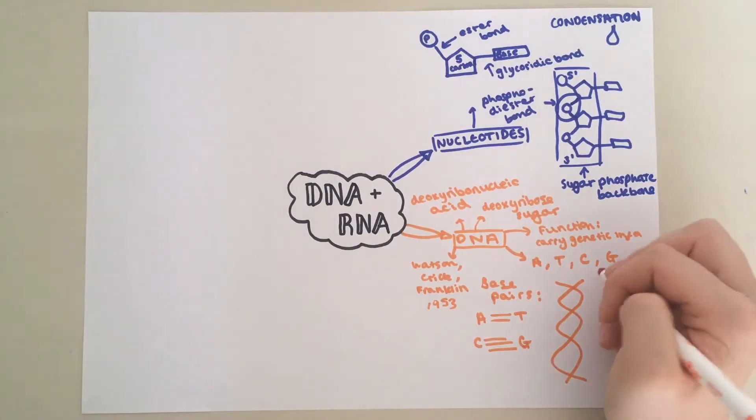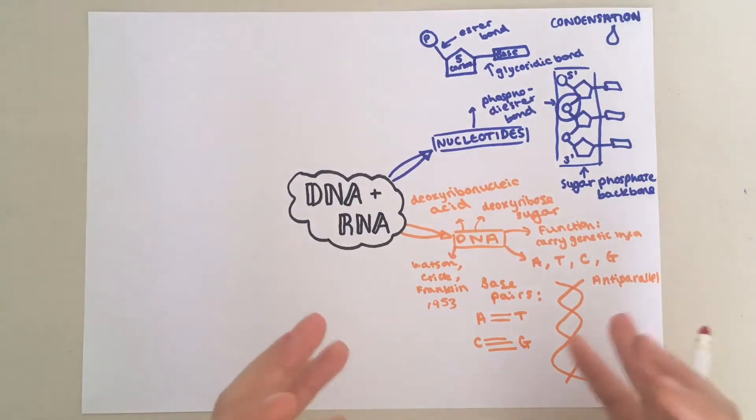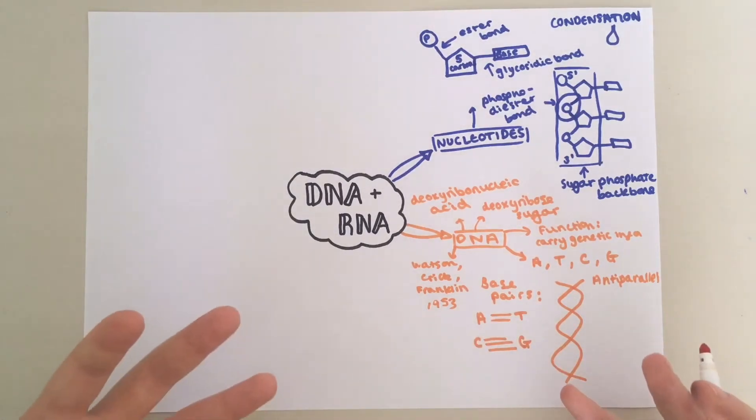It's also important to note that the two polynucleotide chains in this double helix are anti-parallel. This basically means that they run in opposite directions. The coiled structure of DNA is really important because it protects the weak hydrogen bonds, preventing the code from being corrupted.